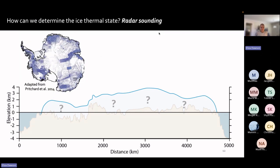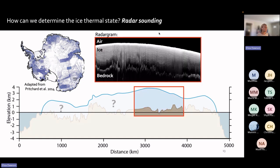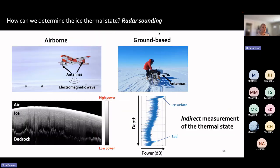On the other hand, there is radar sounding, and the key advantage is that it provides much better spatial coverage, as shown in the map of all radar sounding data across Antarctica. From each of these lines we get a radargram showing a slice through the ice sheet. You can see the internal structure as the electromagnetic wave penetrates through the icy layers and reflects off the bedrock. We can do airborne surveys to get a radargram, and also ground-based surveys. Both contain information about the ice thermal state expressed through variations in signal power — you can see how the electromagnetic wave is sensitive to ice temperature, how much it attenuates, and how bright the bed reflection is.